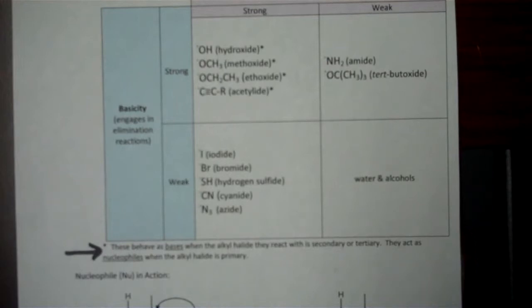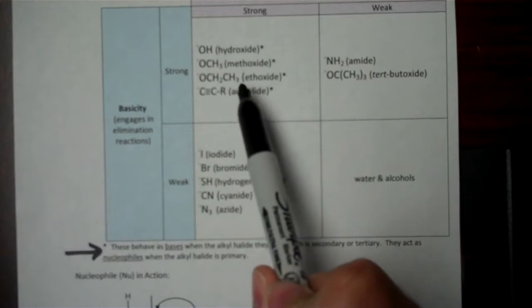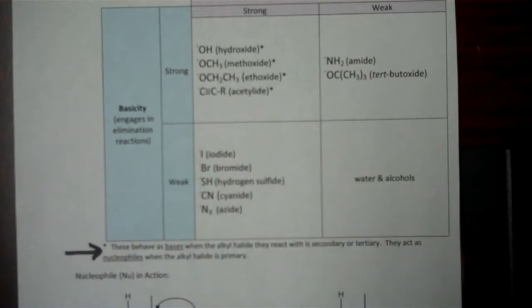There are a couple of problems on the other worksheets that refer to this worksheet because they imply that you are using either a strong base that's also a strong nucleophile and you have to determine in which capacity it's going to behave. Or if you're using something that's a strong nucleophile and a weak base, those are very preferable for the kind of reactions we're talking about in chapter 8.